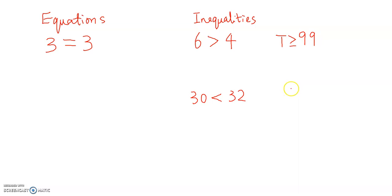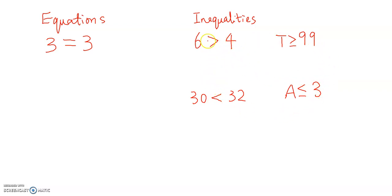And for some amusement parks, they may give toddlers a discount. If the age A of the child is three years old or younger — meaning the age could be exactly three years old or less than three years old — that's less than or equal to. So we have these four different types of inequalities: greater than, less than, greater than or equal to, and less than or equal to.